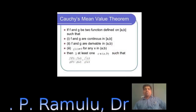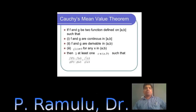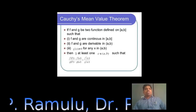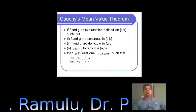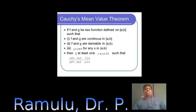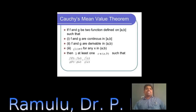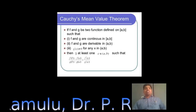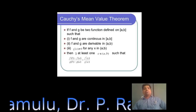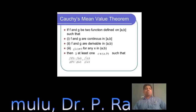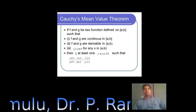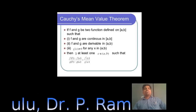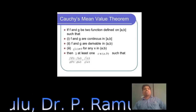Cauchy's Mean Value Theorem: Let f and g be two functions defined on [a, b] such that: first, f and g are continuous on closed [a, b]; second, f and g are derivable on open (a, b); third, g'(x) is not equal to 0 for any x in (a, b). Then there exists at least one C in open (a, b) such that [f(b) minus f(a)] divided by [g(b) minus g(a)] equals f'(C) divided by g'(C).